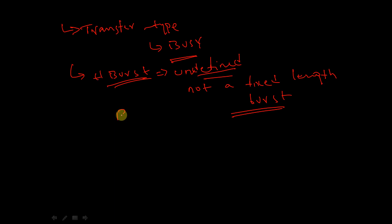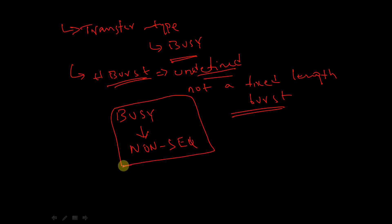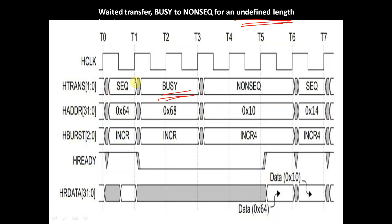In wait states, the master is allowed to change the transfer type from BUSY to NON-SEQUENTIAL in case of undefined-length bursts. Here we can see when the HREADY signal is 0, during the wait state, the transfer type is getting changed from BUSY to NON-SEQUENTIAL. Notice that HBURST is INCR, that is an undefined-length burst.